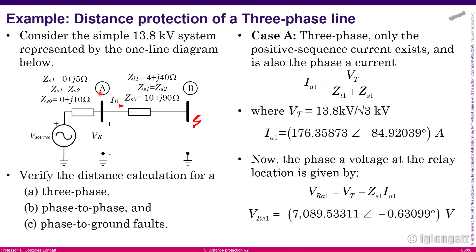The transmission line is connected between bus bar A and B. We know the positive sequence impedance, and the negative sequence equals the positive sequence, and there is a zero sequence impedance. We also have a source with positive, negative, and zero sequence impedances. What we want to do is verify the calculations for three-phase, phase-to-phase, and phase-to-ground faults.